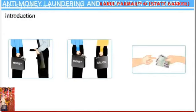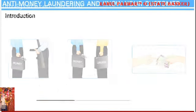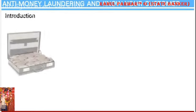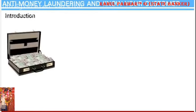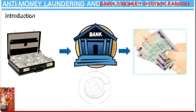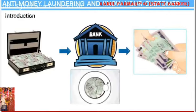There are some people who earn money through illegal activities like illegal arms trade, drugs trafficking, corruption, etc. The money earned through these illegal means is known as black money. Such people always try to transfer the black money through the banking system so that it becomes white or clean. This process is known as money laundering.